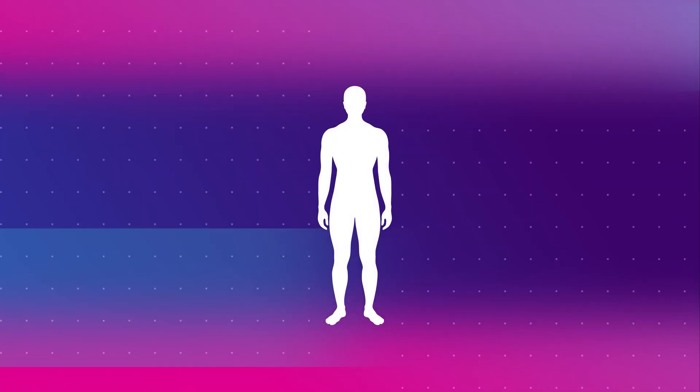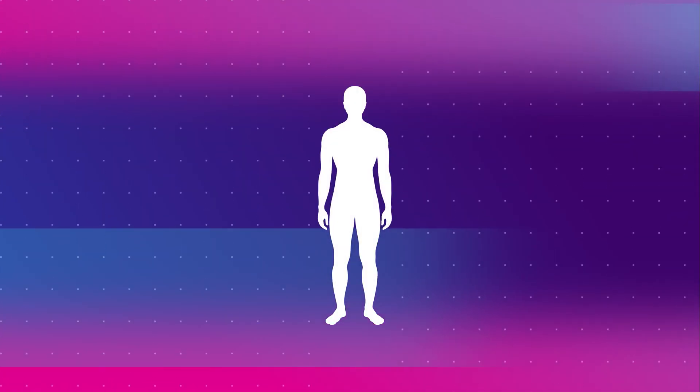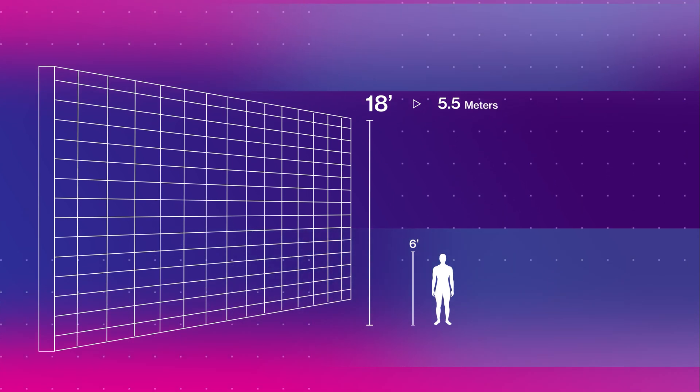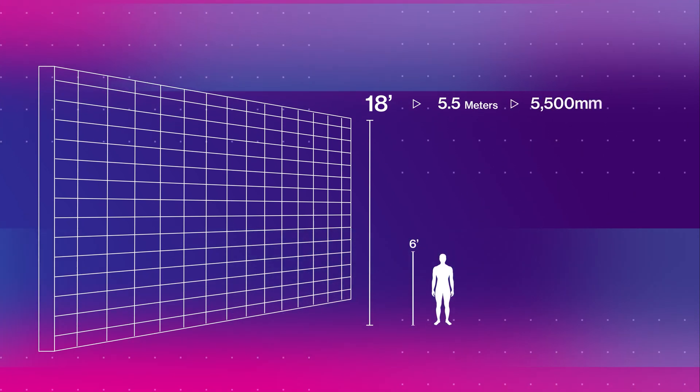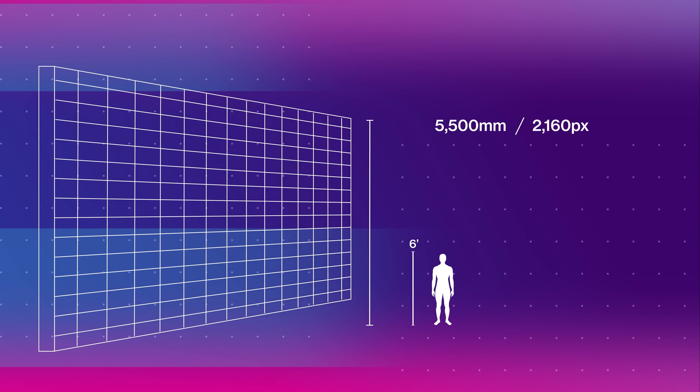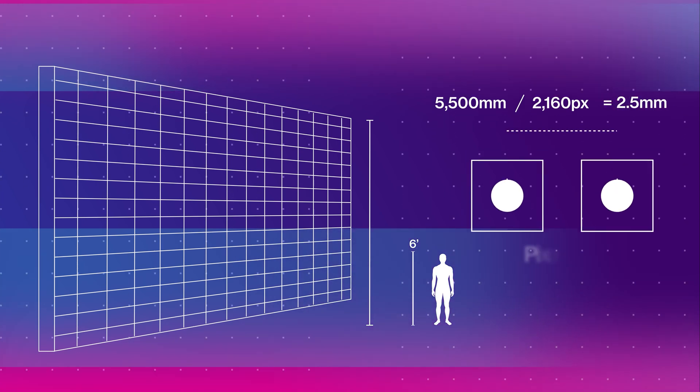Remember, pixel pitch is just the distance center to center between two LEDs on an LED display, and that distance is typically measured in millimeters. Since we know the height our wall needs to be physically, we can calculate the pixel pitch based on that if we keep our resolution at 4K. Sticking with our stand-up example: our athletes are six feet tall, we need our wall to be three times that — 18 feet, which equates to roughly 5.5 meters. Convert that to millimeters: 5,500, then divide by 2,160 — the number of pixels tall in a 4K frame. That gives us a 2.5 millimeter pixel pitch.